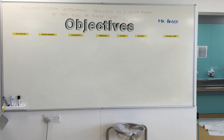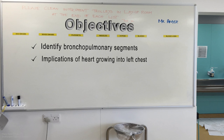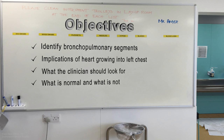The objective of this video is to show you, in an easy and logical way, how to identify the bronchopulmonary segmental divisions at bronchoscopy. In addition, I aim to explain the implications of the heart growing into the left chest. I will show what the operator should look for, what is normal and what is abnormal, to help decision-taking in the operative and perioperative period.